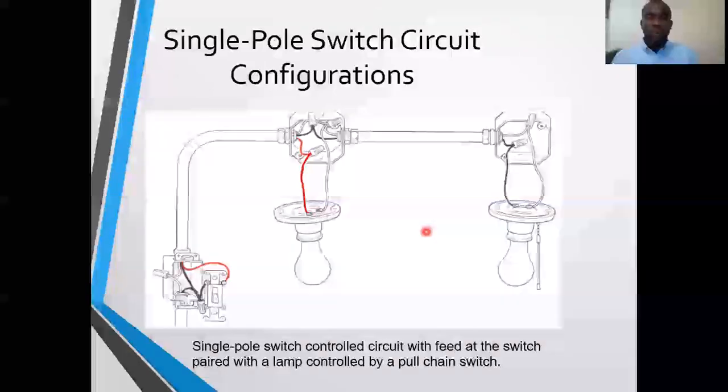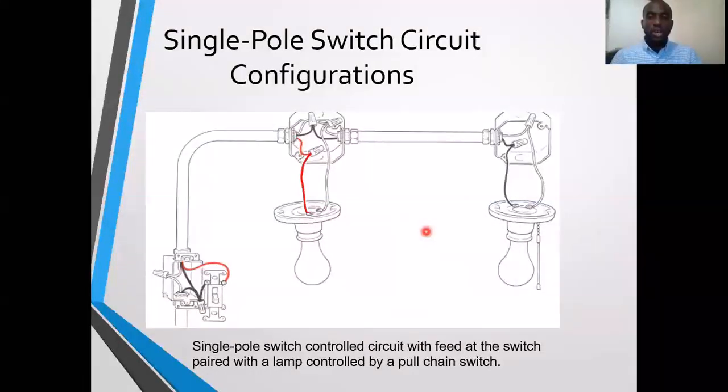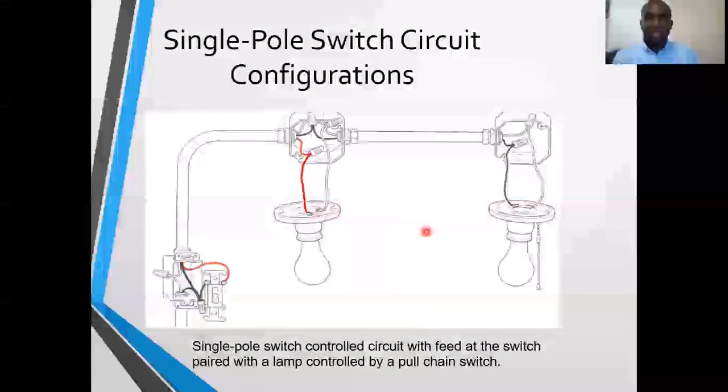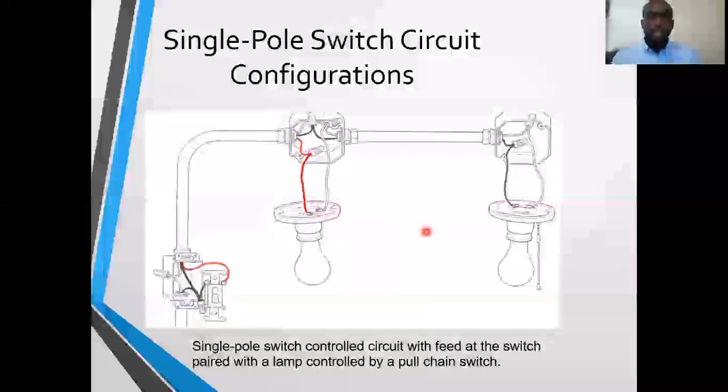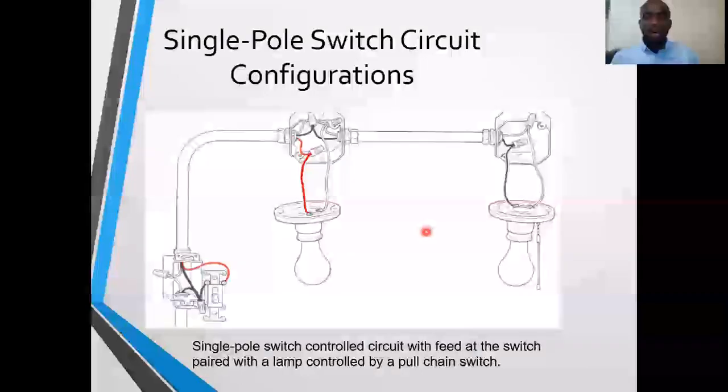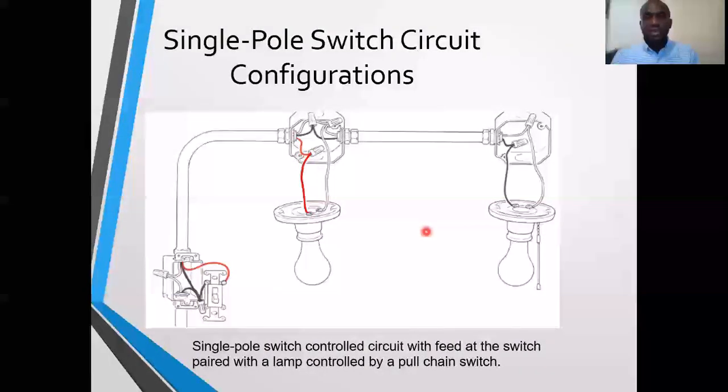Here we have another configuration where we have a single pole switch controlled circuit with the feed at the switch, but this is also paired with a lamp controlled by a pull chain switch.